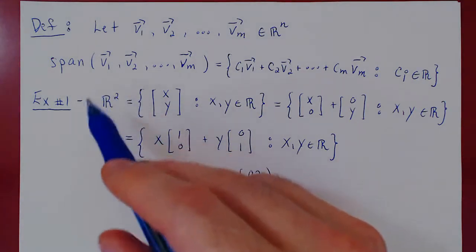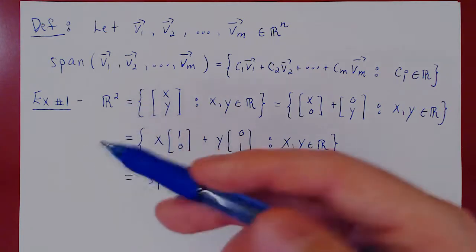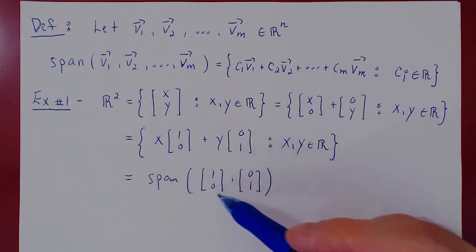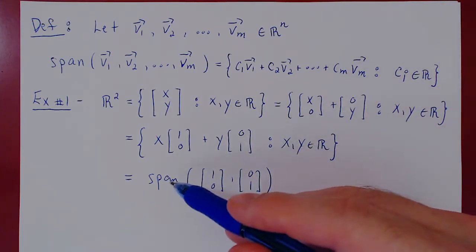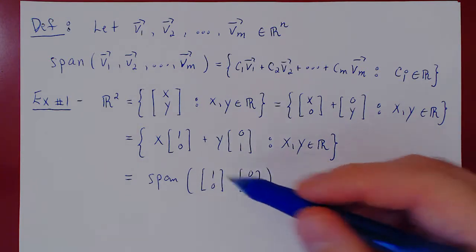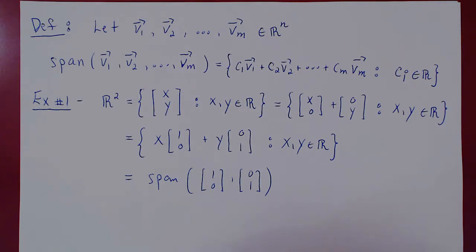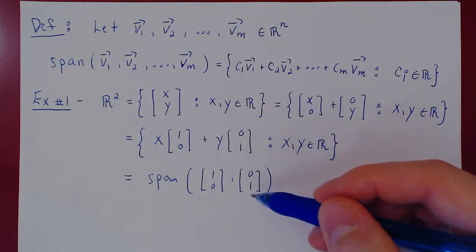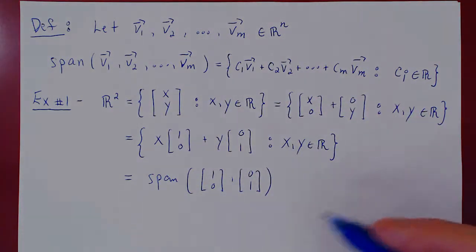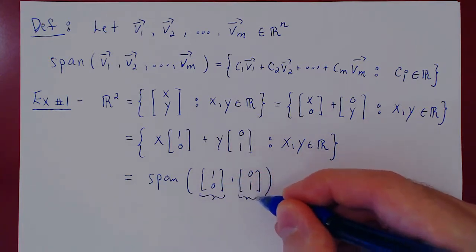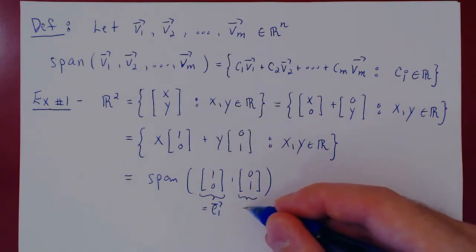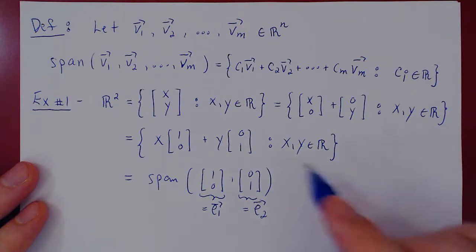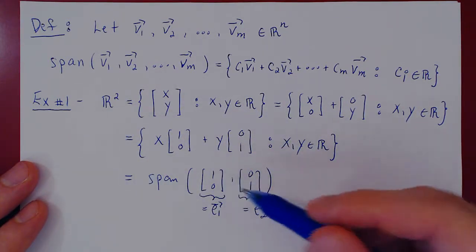We have reduced our thinking about R2 — an infinite set of vectors — down to just two vectors: the span of (1, 0) and (0, 1). What can we generate with these vectors? The entire xy-plane. Geometrically, (1, 0) allows you to generate the x-axis and (0, 1) allows you to generate the y-axis. We call these vectors e1 and e2. So R2 is the span of e1 and e2.